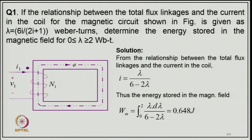Example 1: The relationship between total flux linkage and current in the coil for a magnetic circuit is given as λ = 6i/(2i + 1) Weber-turns. Determine the energy stored in the magnetic field for λ varying from 0 to 2 Weber-turns. Solution: From the relationship, i = λ/(6 − 2λ). The element of stored energy in the magnetic field is dW_m = i·dλ, so W_m = ∫₀² λ·dλ/(6 − 2λ) = 0.648 joules.